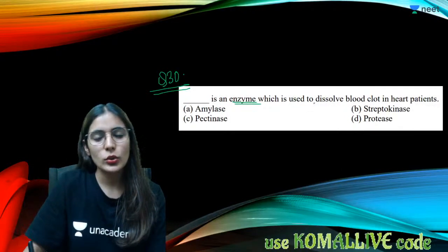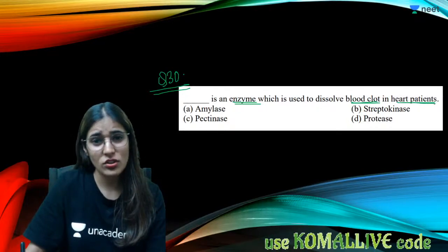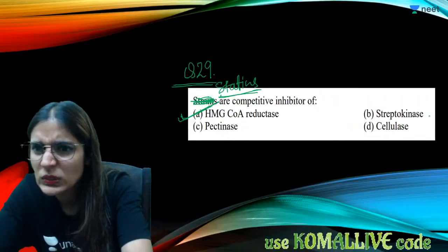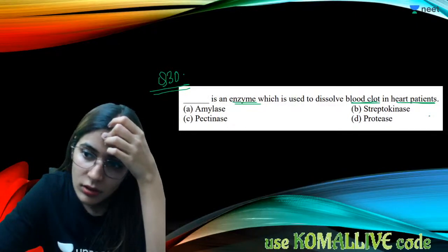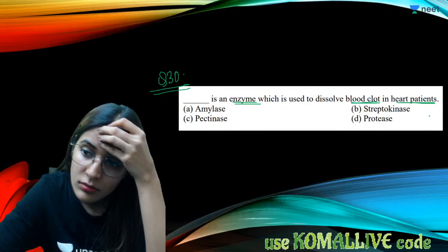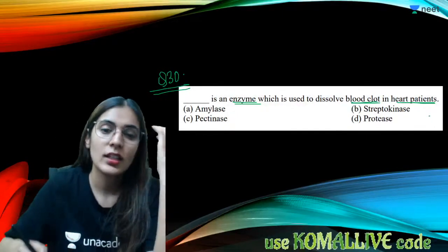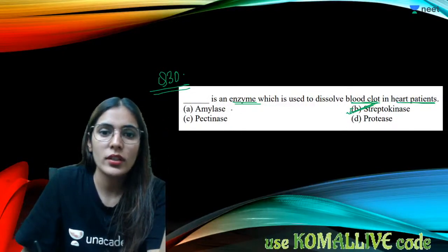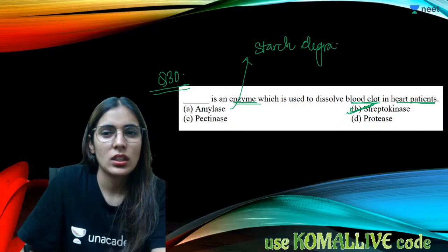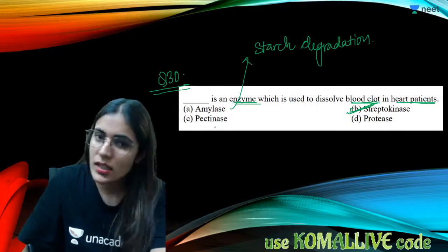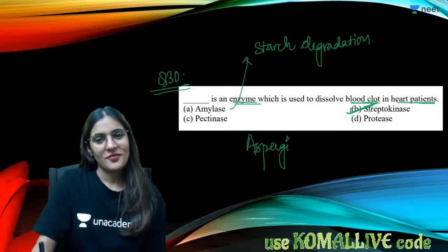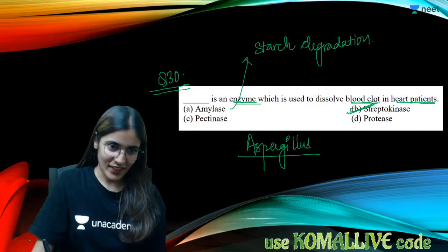Question thirty: which enzyme is used to dissolve blood clots in heart patients? The answer is streptokinase, produced by Streptococcus. Amylase degrades starch, not clots. Pectinases and proteinases mostly come from Aspergillus for breakdown purposes. Streptokinase is the clot-dissolving enzyme.